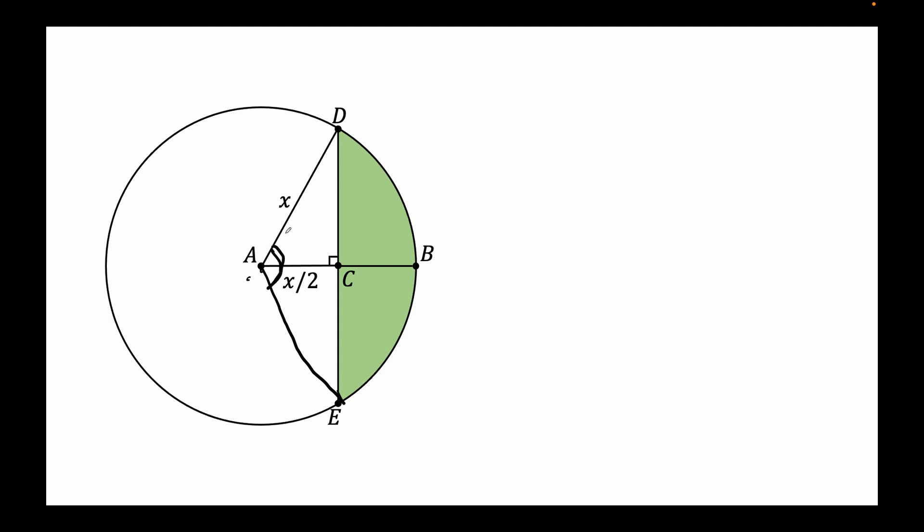Half of this angle is this angle. Angle DEC equals the angle DAE divided by 2. And we want this angle. This angle we can get by using cosine, because we have the base here and we have the hypotenuse. So the base divided by the hypotenuse equals cosine of the angle DAC.